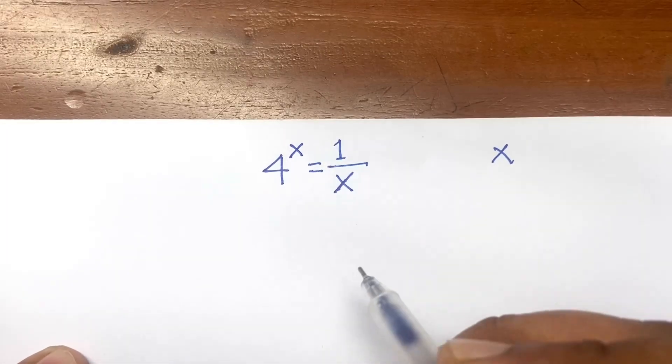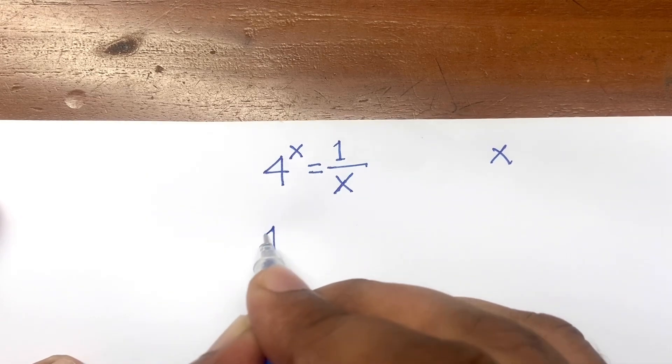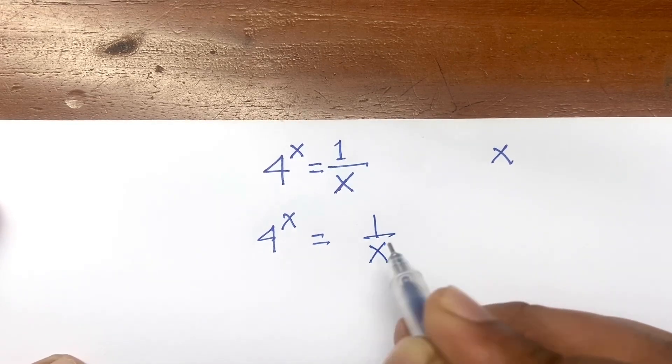How to solve 4 to the power x is equal to 1 over x? Find the value of x. So, here is 4 to the power x is equal to 1 over x.